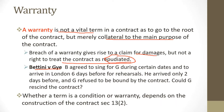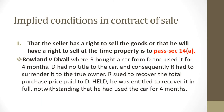Having understood what a term means, what a representation means, the categories of terms — both express and implied — and the distinctions between a condition and a warranty, look at Section 13 of the Sale of Goods Act. Section 13 states that whether time is a condition or a warranty depends on the construction of the contract.